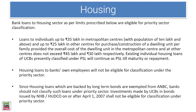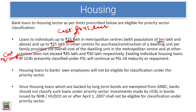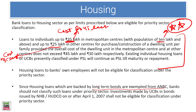Bank loans for the housing sector: loans to individuals up to 35 lakh rupees in metropolitan centers with a population of 10 lakh and above, where the cost of the house does not exceed 45 lakhs, are priority sector loans. For other cities, loans up to 25 lakh rupees, where the cost of the house is up to 35 lakhs, are priority sector loans. Loans to a bank's own employees are not considered. Housing loans backed by long-term bonds are exempted from ANBC and should not be counted for priority sector. This has been asked in a previous paper.